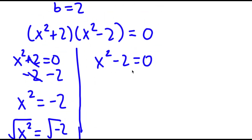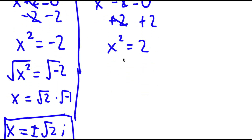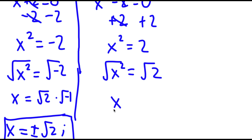For x squared minus 2 equals 0, I can simply add 2 on both sides, and I get x squared is equal to positive 2. To solve this, I'm going to take the square root on both sides. The square root of x squared is x, and this is equal to positive or negative square root of 2.